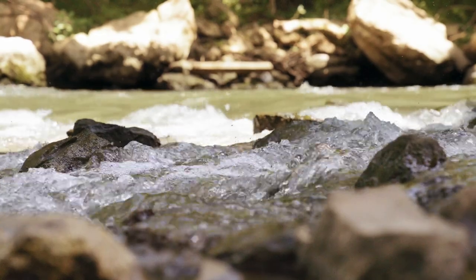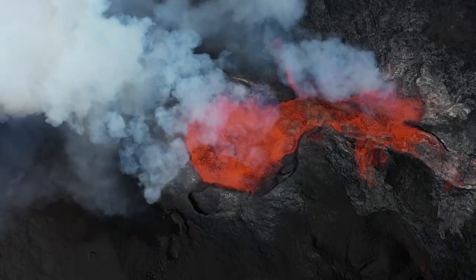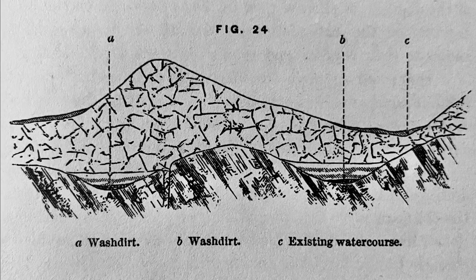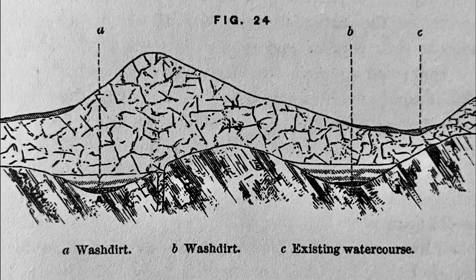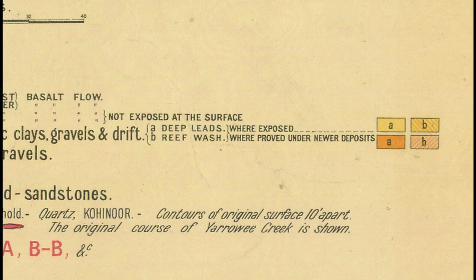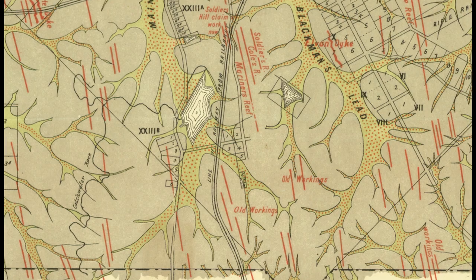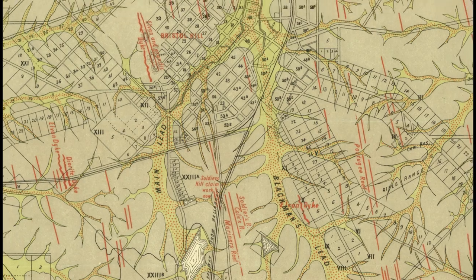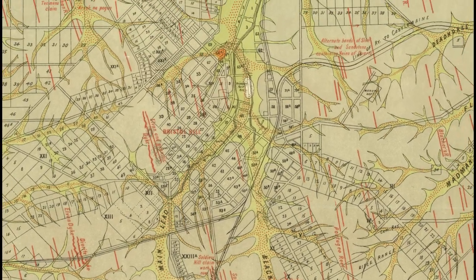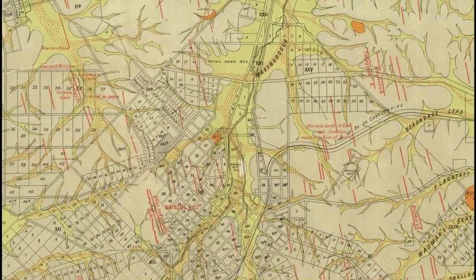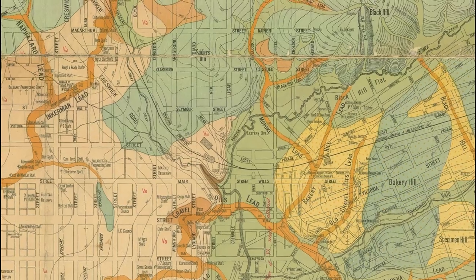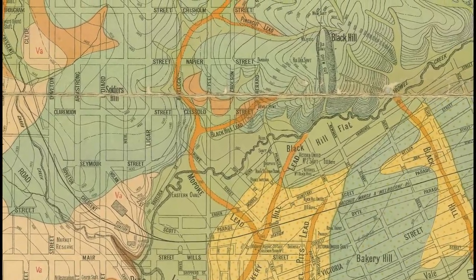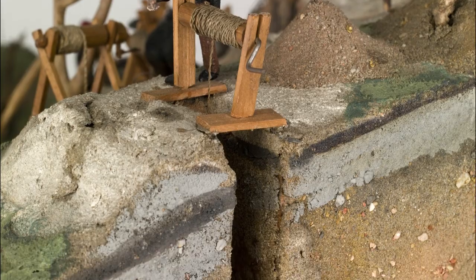Many ancient gold-bearing creeks and rivers have been covered over by geological changes such as lava flows. These ancient riverbeds buried beneath the ground are called leads. You will find leads marked on most gold maps, and you will notice that they follow the same visual pattern as a modern-day watercourse, with headwaters and tributaries leading into a river. Leads were often discovered and traced from shallow areas, usually around the headwaters of the ancient river, then followed deeper underground.